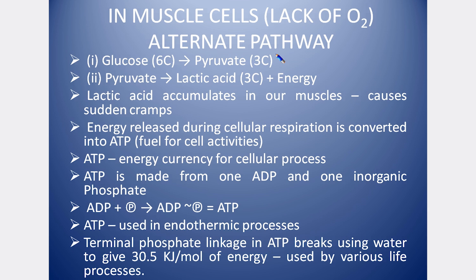This alternative pathway is for muscle cells. The first step is that glucose is converted to pyruvate. The second step is that pyruvate releases lactic acid. The lactic acid will then accumulate in the muscle cells.